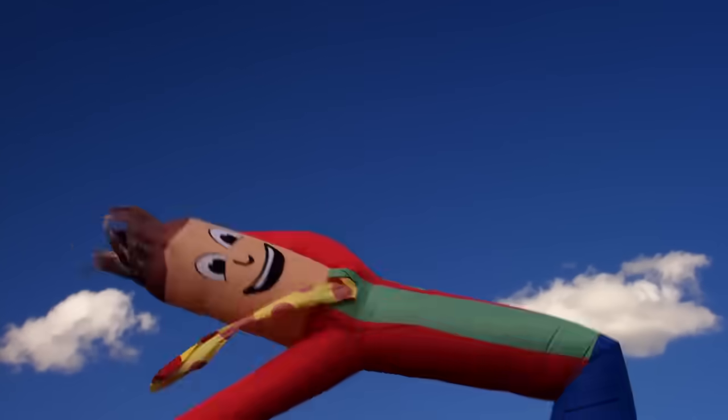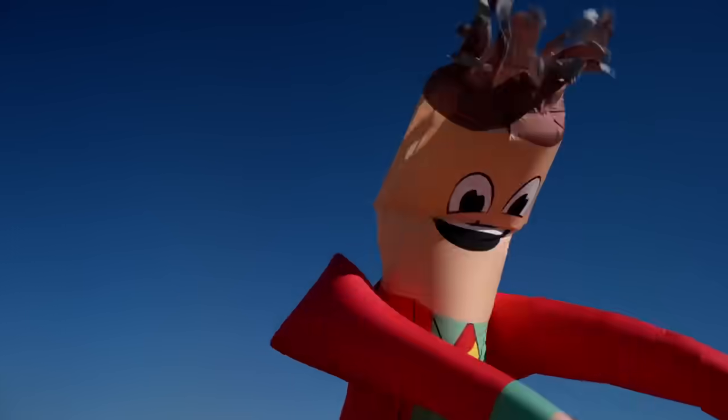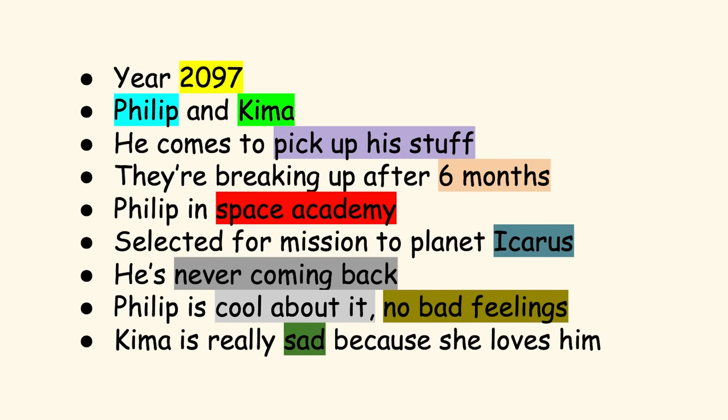Before you tackle a big dialogue scene, there are a couple things you'll need to do. Firstly, you'll need to list off all of the information the scene needs to communicate. To demonstrate this, I'm going to create a hypothetical sci-fi drama scene featuring the characters Philip and Kima, whom we're meeting for the first time. Here's how the scene is described on the sticky note. It's the year 2097. Philip comes to Kima's flat to pick up his stuff. Their six-month relationship is ending because Philip, a Space Academy student, has just been selected for a one-way trip to the planet Icarus.